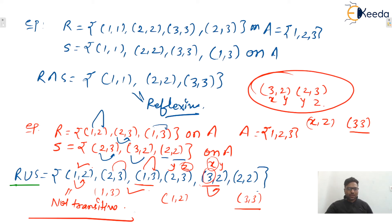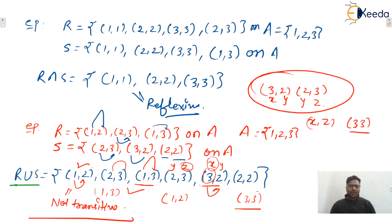So that's all about relations. We've covered sets, relations, and functions. In the next lecture we will start partial ordering, lattices, different types of lattices, extremal elements like least upper bound and greatest lower bound. After that we'll start group theory, and then graph theory as the last part of discrete mathematics.